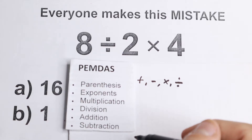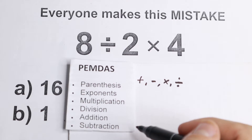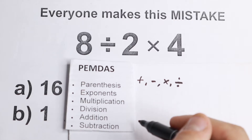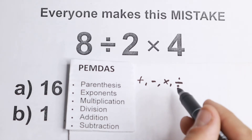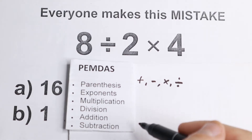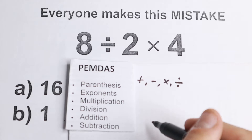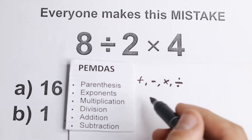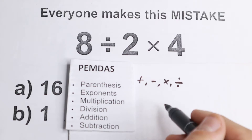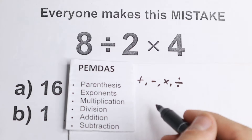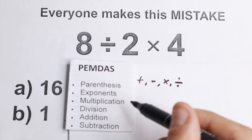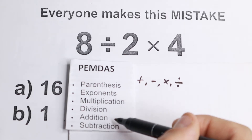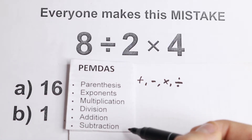A lot of students make this error — and it's really not their fault, there's obvious confusion about it. Most people think you're going to do this in a strict left-to-right order, meaning you always do multiplication before division, and addition before subtraction. However, that's not the way it works.